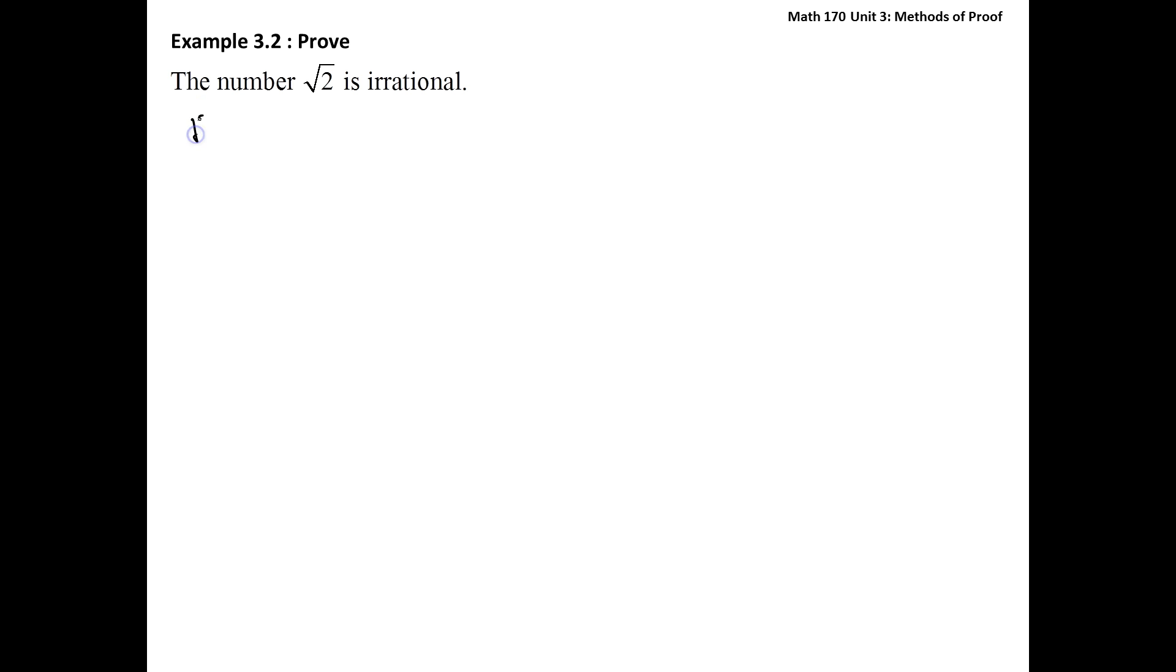We're going to start off by assuming that it is rational. We're going to show how this leads to a contradiction. It's going to lead to something being true and false at the same time, and that can't be. If the square root of 2 is rational, thus what that means is that the square root of 2 is equal to some a over b.